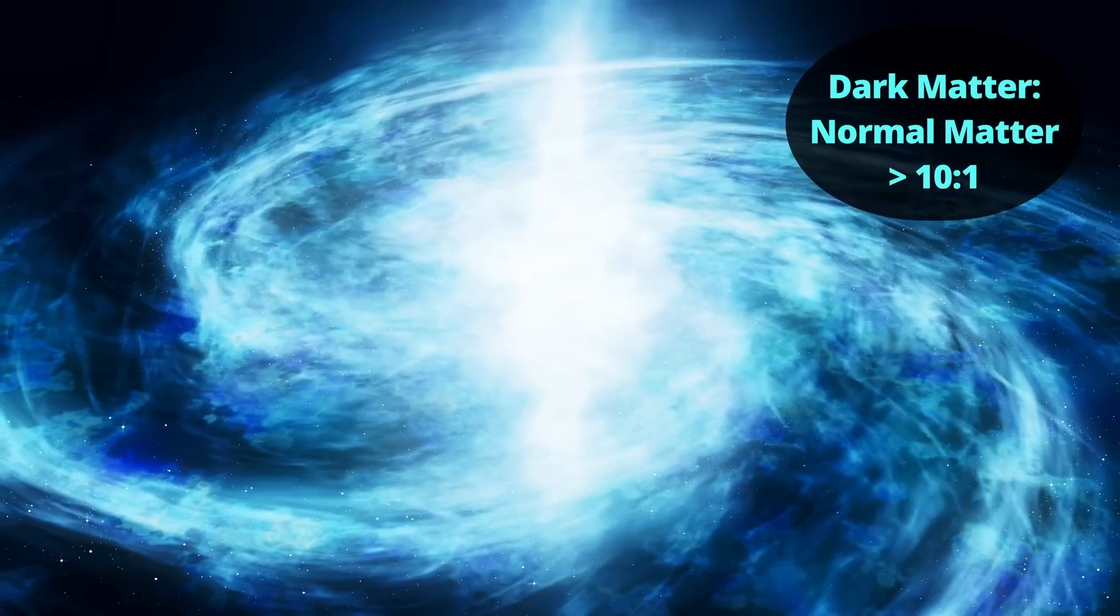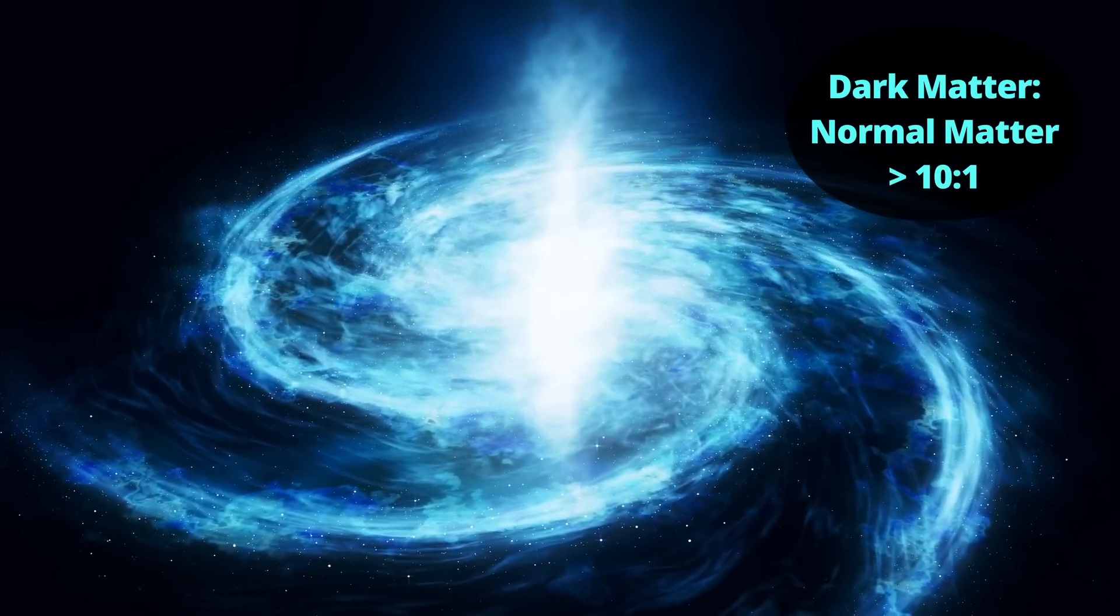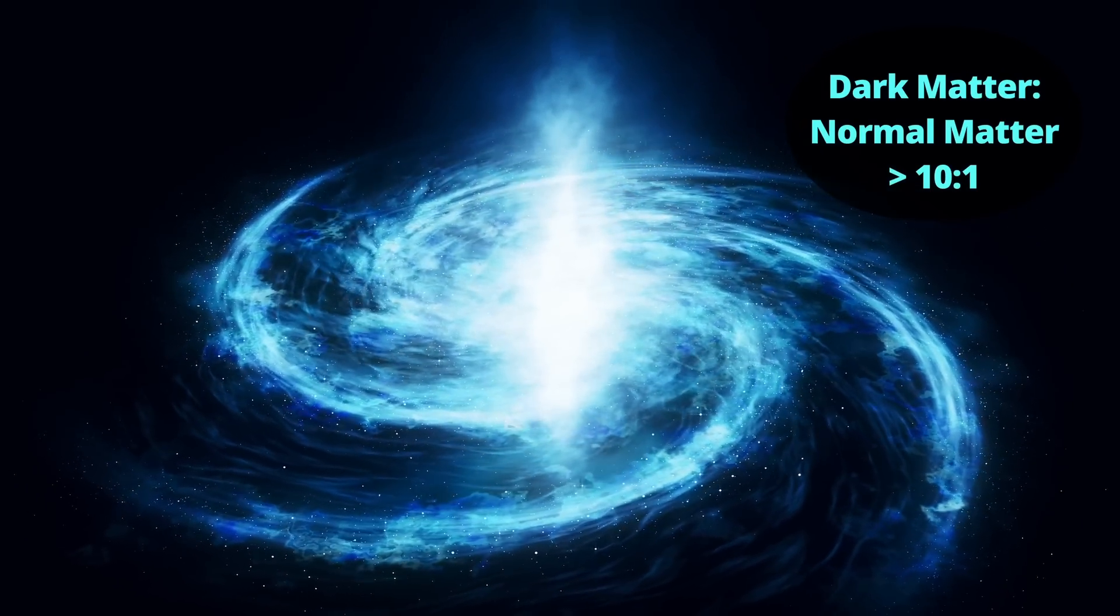But in galaxies, it's more like 10 to 1 or even 20 to 1. So if you want to get the average in the universe right, then the ratio in the space between galaxies must be lower. Hence, the dark matter halos must fade out.